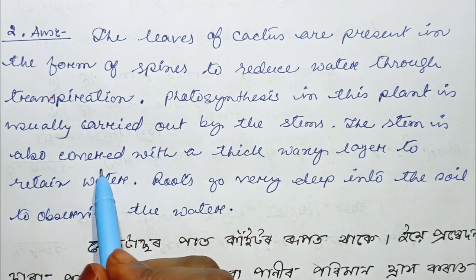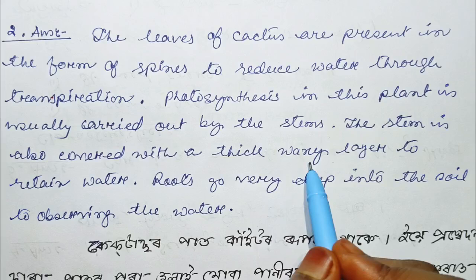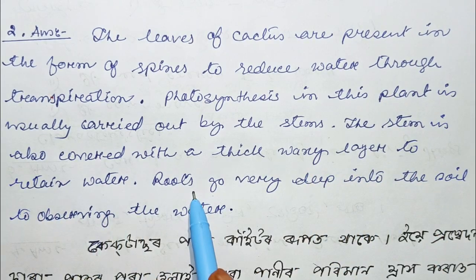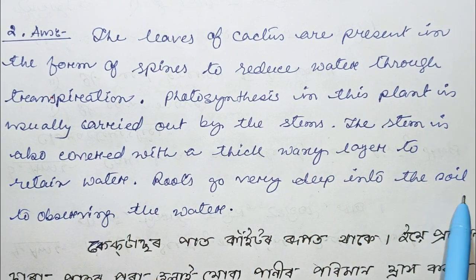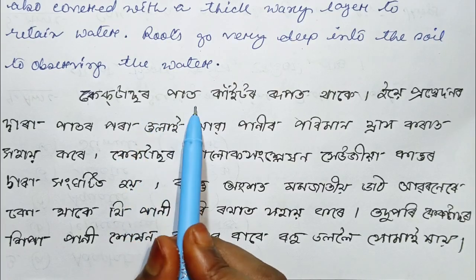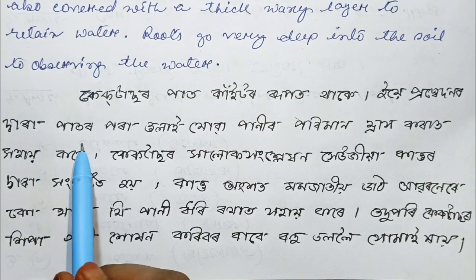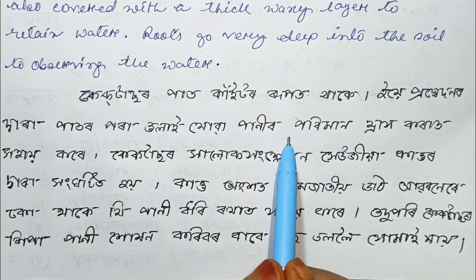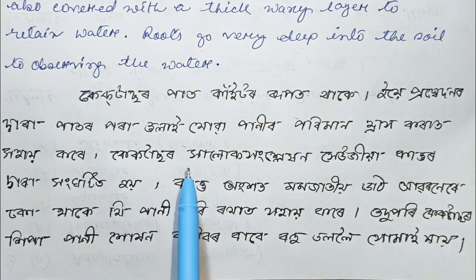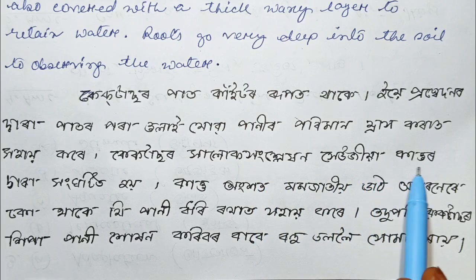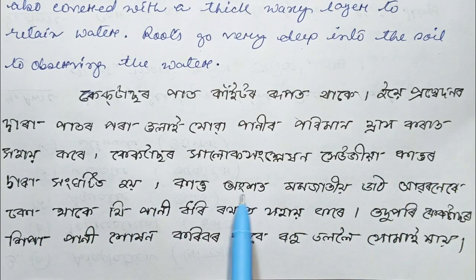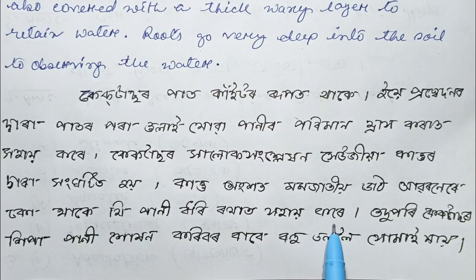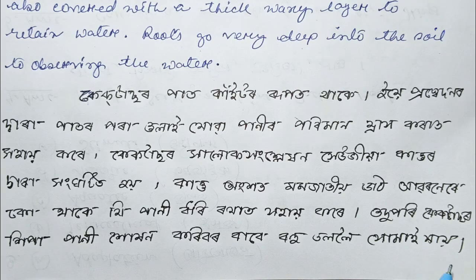The stem is also covered with a thick waxy layer to retain water. Roots go very deep into the soil to absorb water. In the local language: the cactus leaves are in the form of spines to prevent water loss through transpiration; the stem is covered with a waxy layer to retain water; and the roots go deep to absorb water.